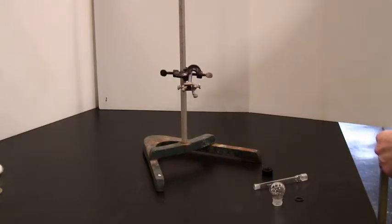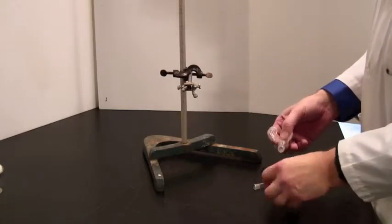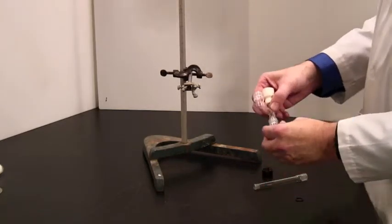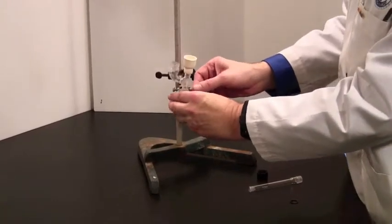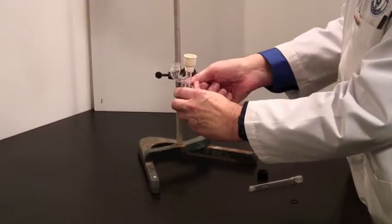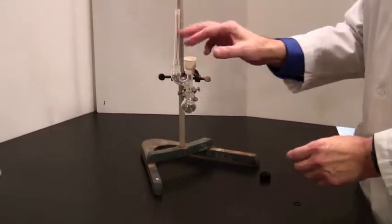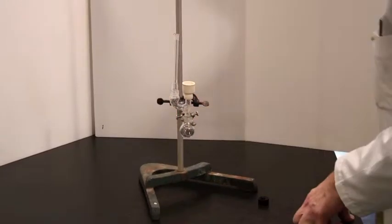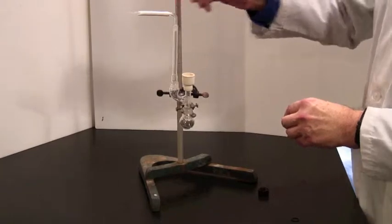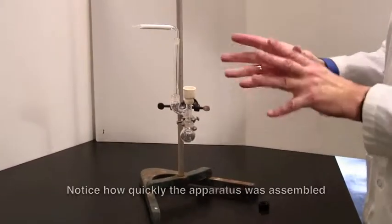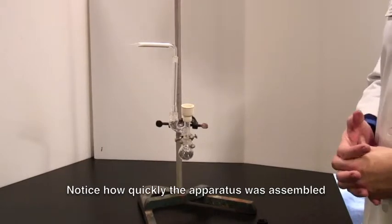You will need to take the Claisen head that you've attached something to, and it will go in here, like so, and then be clamped in a three-finger clamp like that. You will then put your air condenser in here and stop the top end of the air condenser with the drying tube. If you can do that kind of setup while the glassware is still warm, that's a good idea.